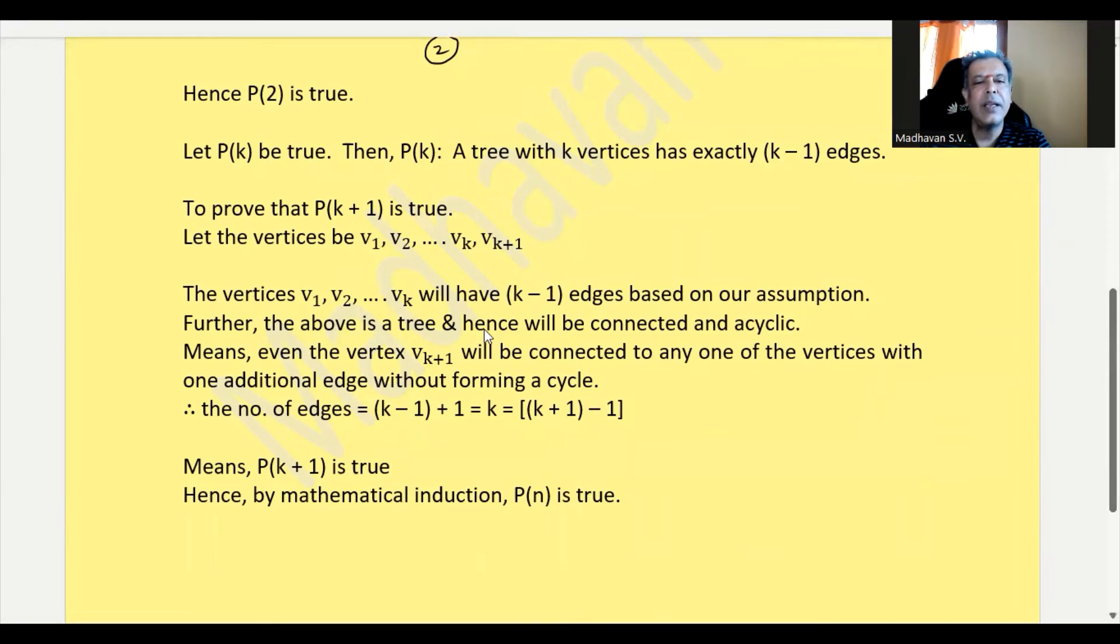Further, the above is a tree and hence will be connected and acyclic, means even the last vertex, the new vertex, which is Vk plus 1, will be connected to any one of these vertices with one additional edge without forming a cycle.